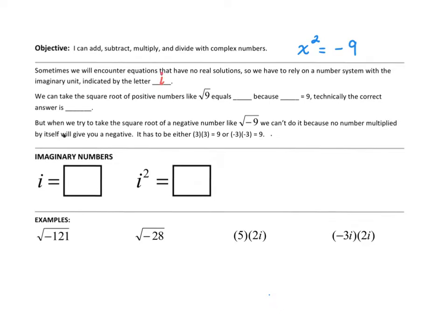So we have to rely on a number system with the imaginary unit indicated by the letter i. So I usually draw it with a little curve on the end so it doesn't look like a 1. So now the letter i is a number, an imaginary number.